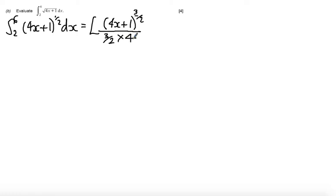And then evaluate that between 2 and 6. Simplify this expression. On the numerator, 3 over 2 times 4 gives us 6. I'm going to take that outside, it's just a constant. So now I just have to evaluate 4x plus 1 to the power 3 over 2 in between 2 and 6.